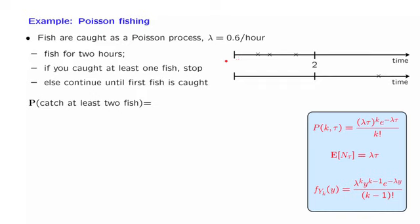The next question is: what is the probability that we catch at least two fish? Under the second scenario, we catch one fish and stop. Therefore, the first scenario must have materialized. The event of catching at least two fish corresponds to the scenario where, from time zero to two, we caught at least two fish.